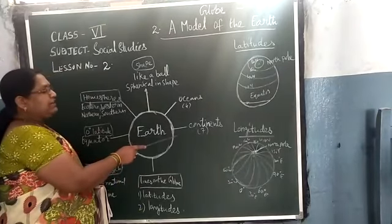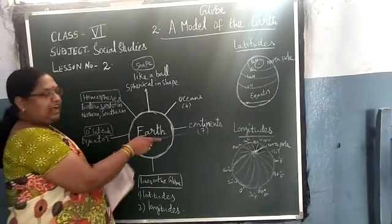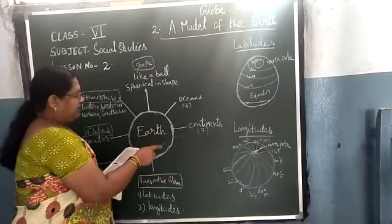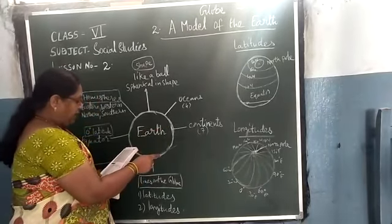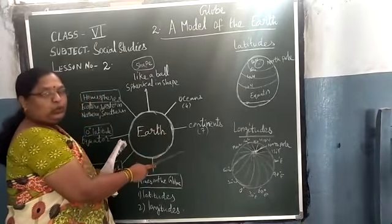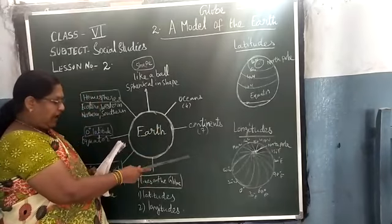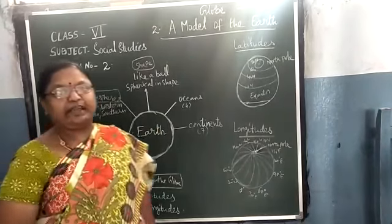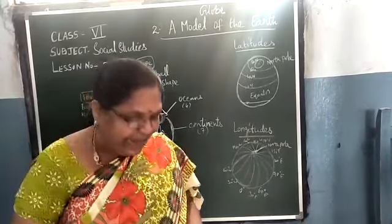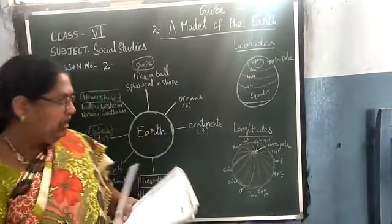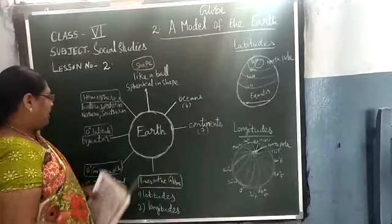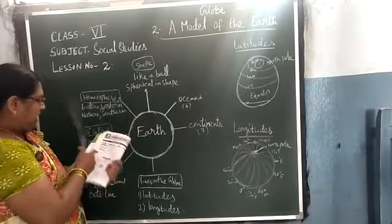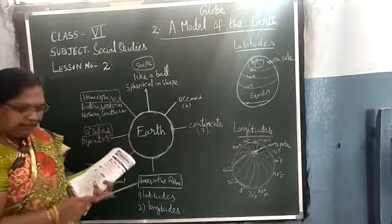Now how many continents are there? There are 7 continents: Asia, Africa, Europe, Australia, North America, South America, and Antarctica.